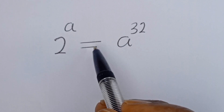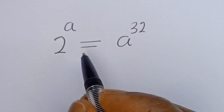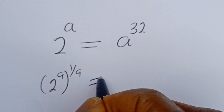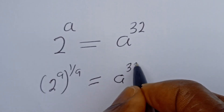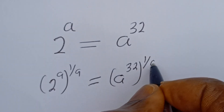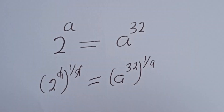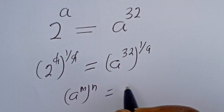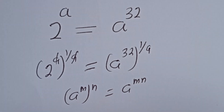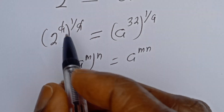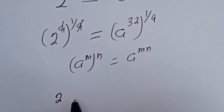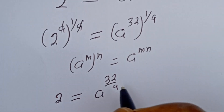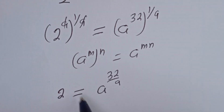Let's multiply the exponent of both sides by 1 over a. That is 2 to the power of a, to the power of 1 over a, is equal to a to the power of 32 to the power of 1 over a. This will cancel, and using the rule that m to the power of n to the power of p equals m to the power of n times p, this becomes 2 is equal to a to the power of 32 over a.